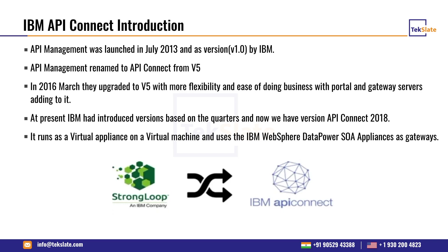IBM acquired StrongLoop company, and on top of StrongLoop they implemented the open-source micro gateway framework — the LoopBack framework — built on top of Node.js. APIs designed inside this product run on top of the LoopBack framework or the DataPower gateway.